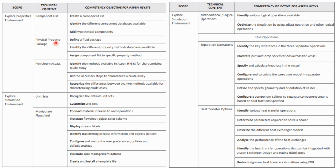In the physical property package, you should be able to define a property package and identify different property packages available. We discussed three major types: equation of state, activity coefficient, and special models. You should also be able to assign a component list to specific property methods. In petroleum assays, you should be able to identify the methods available in S-Penheises for characterizing the crude assay and list down the steps to characterize it.